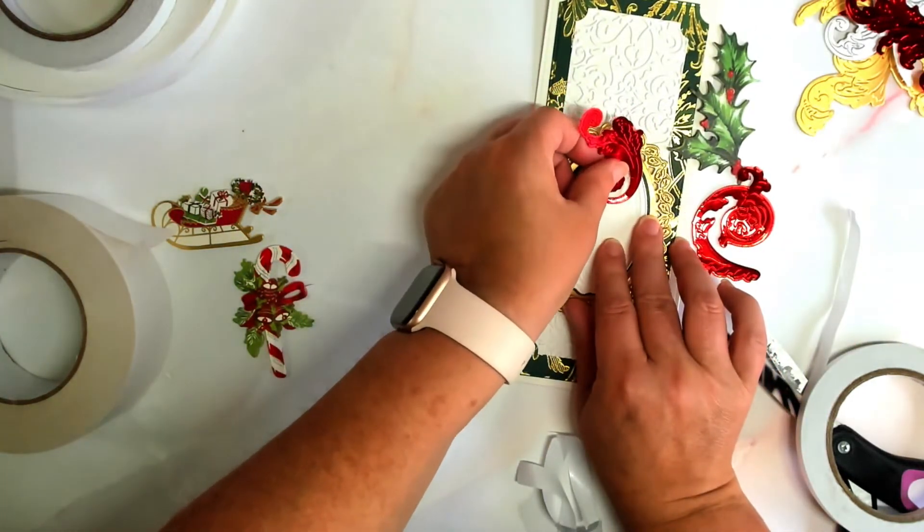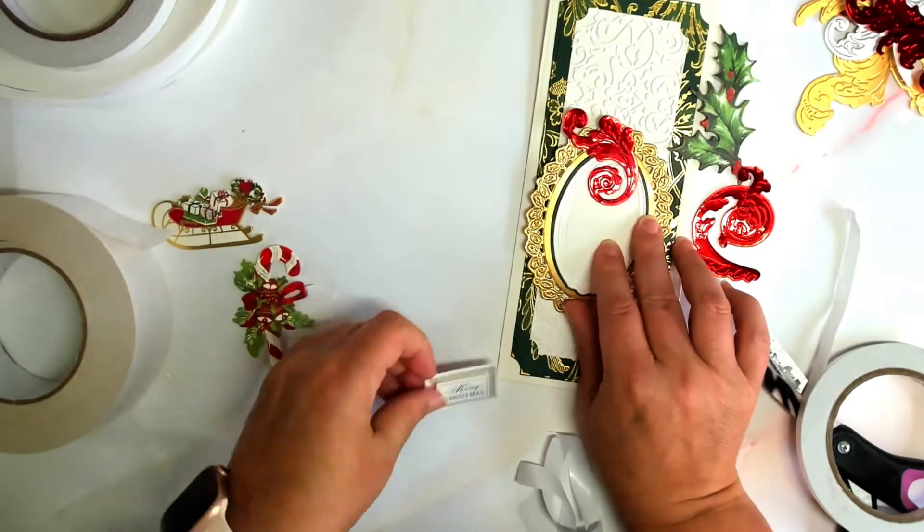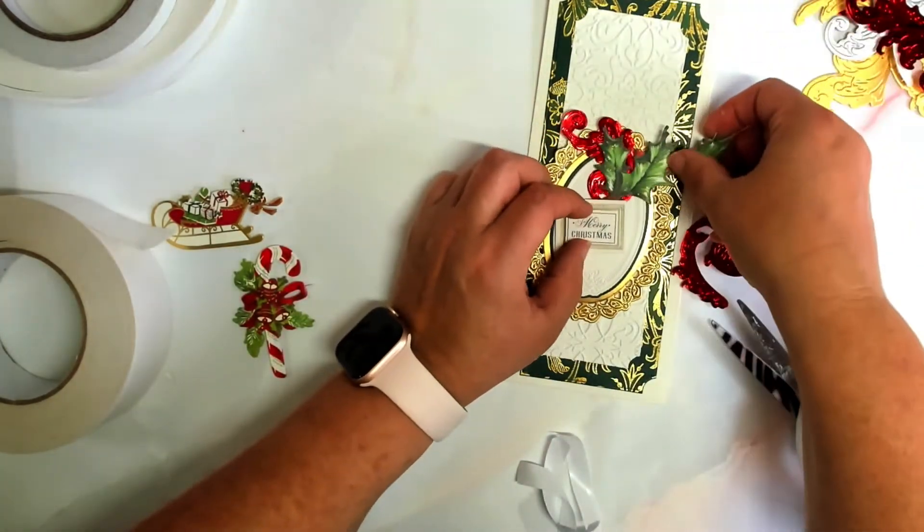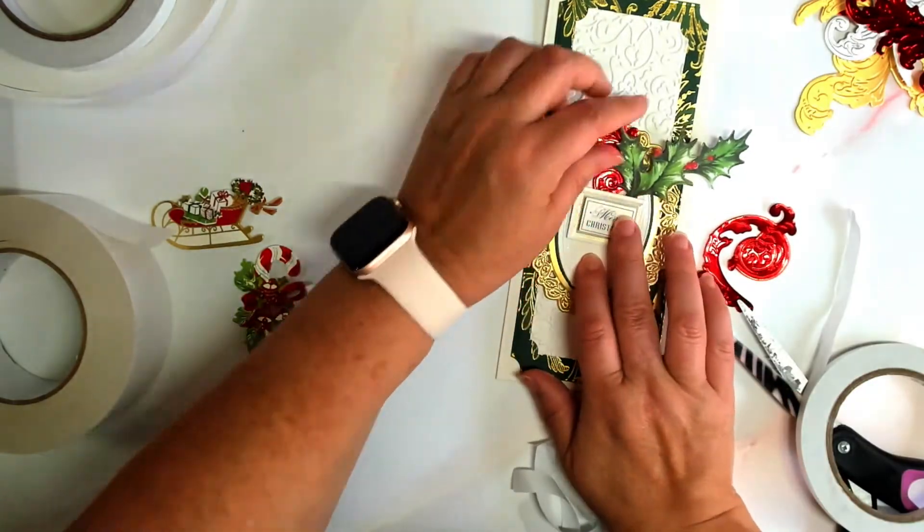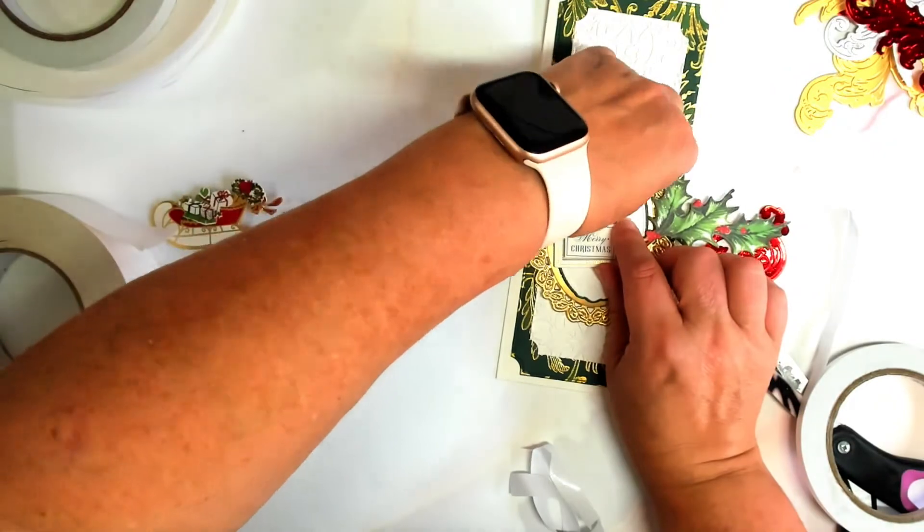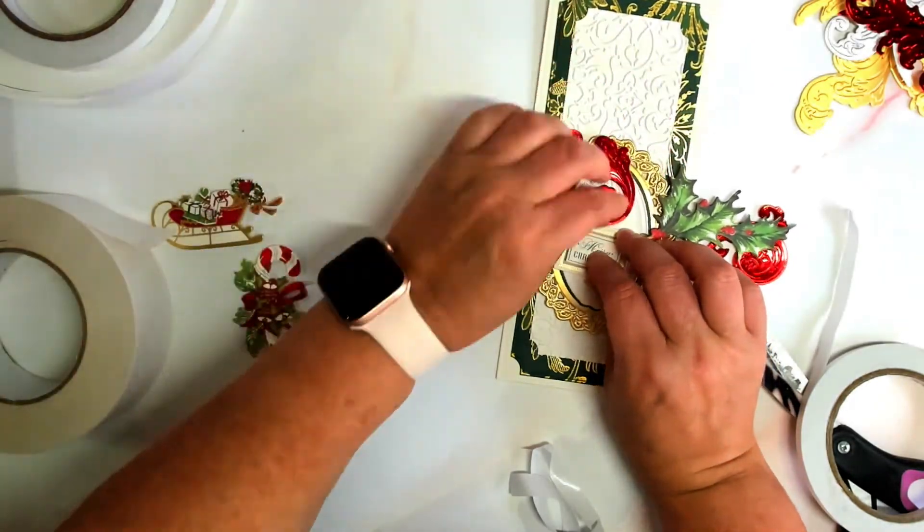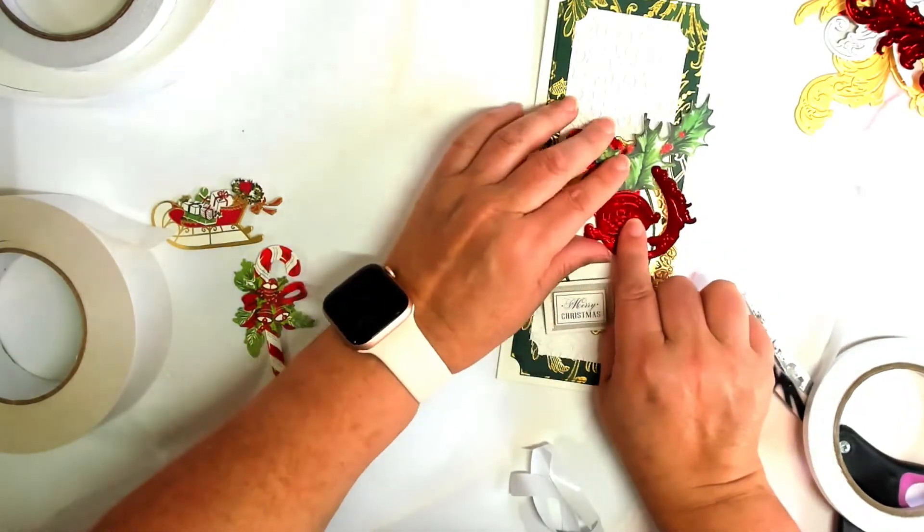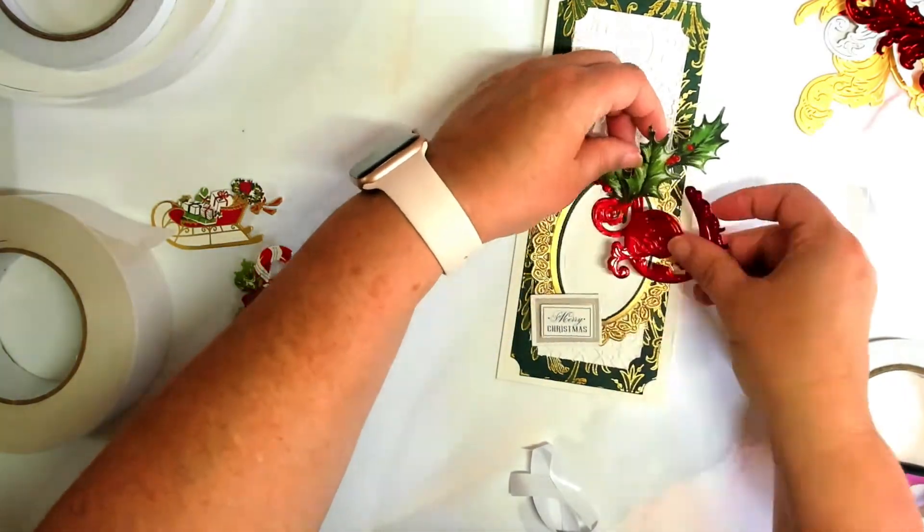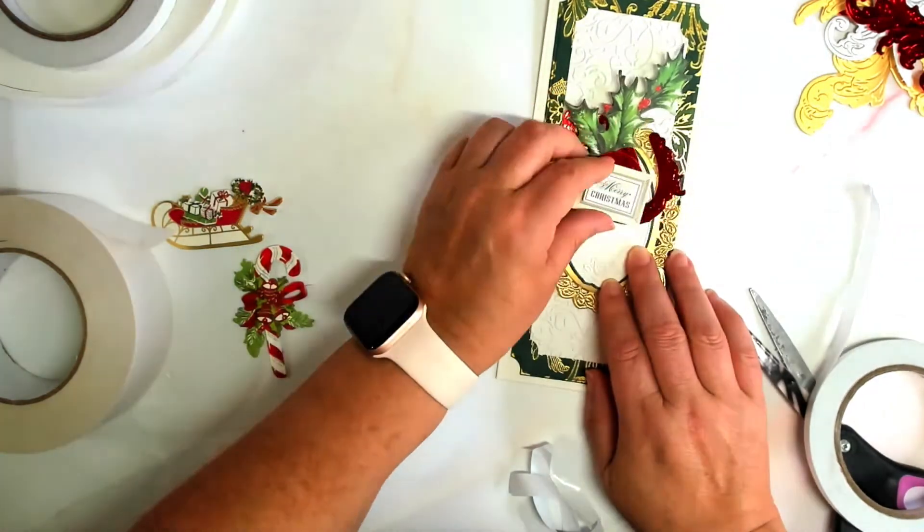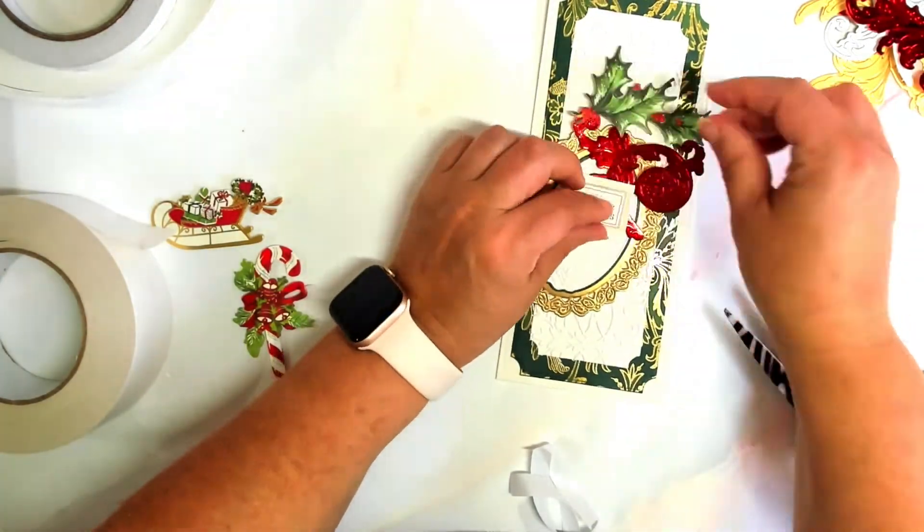These Ornate Flourish embellishments look the best when they're paired with florals or greenery. And I had to play around a couple of times to see exactly where I wanted this. I decided that I wanted it underneath my sentiment and it ended up being absolutely gorgeous.